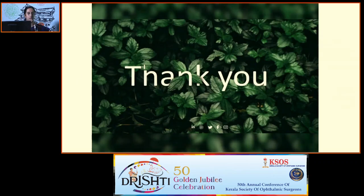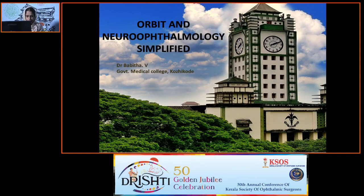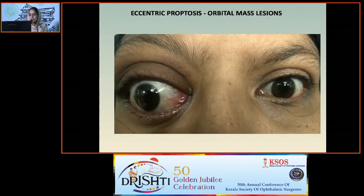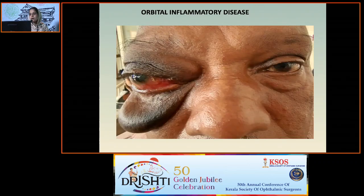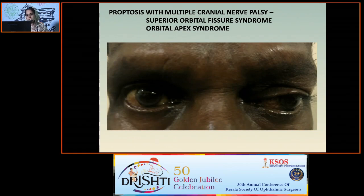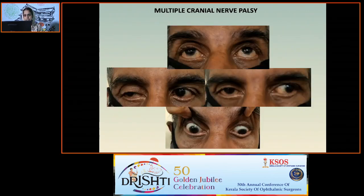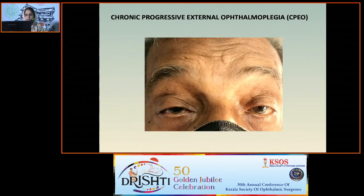Dr. Babita is invited for a discussion on orbit and neuro-ophthalmology cases. Common examination cases include bilateral axial proptosis due to thyroid ophthalmopathy, eccentric proptosis due to orbital mass lesions, proptosis due to orbital inflammatory diseases, proptosis with multiple cranial neuropalsy including superior orbital fissure syndrome or orbital apex syndrome, blowout fractures, ocular motor neuropalsy, abducens neuropalsy, multiple cranial neuropalsy, ocular myasthenia, and chronic progressive external ophthalmopathy.